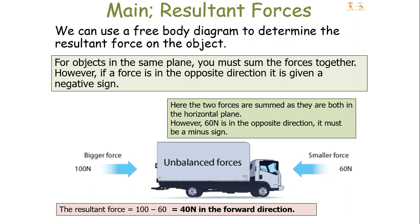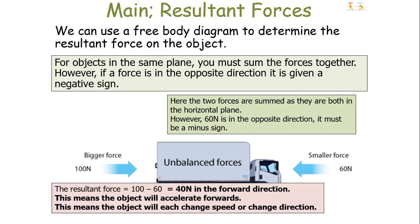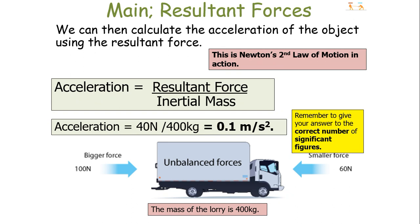We can use the free body diagram to determine the resultant force, but for forces in the same plane you sum them together, giving a negative sign to forces in the opposite direction. In this example the lorry has a resultant force of 40 newtons forwards, calculated as the difference between 100 and 60 newtons. Using Newton's Second Law, acceleration equals resultant force divided by inertial mass: 40 newtons divided by 400 kilograms gives an acceleration of 0.1 metres per second squared, given to one significant figure.